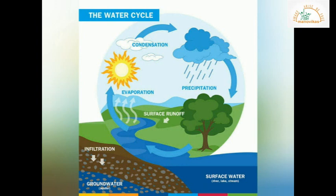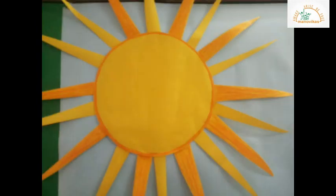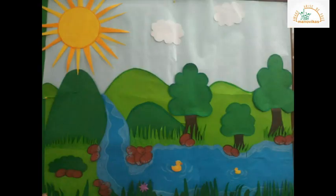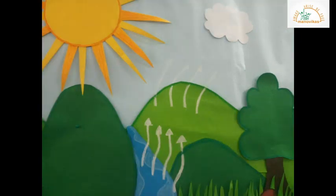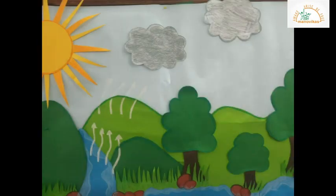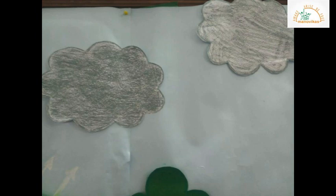It is all due to the water cycle. So come, let's learn about the water cycle. As you can see, here is the Sun. The Sun hits all the water bodies and the water changes into water vapor and rises in the air. Then the water vapor cools and forms into small water droplets, which come together to form clouds.